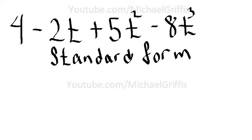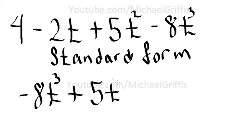So let's take the negative, this part here, 8t cubed, plus 5t squared, minus 2t, plus 4. Now it's written in standard form.